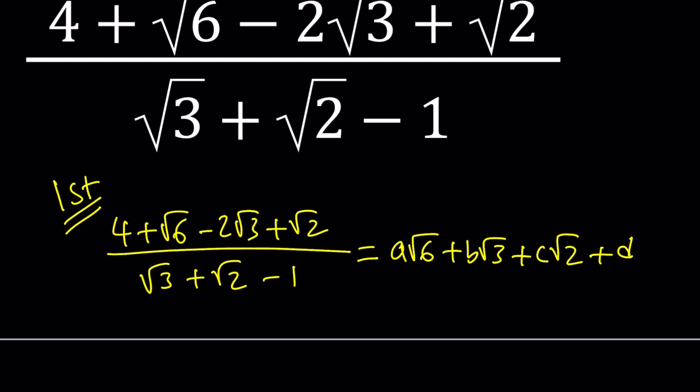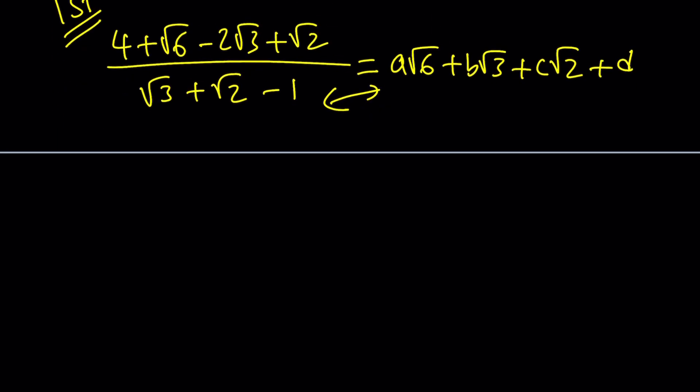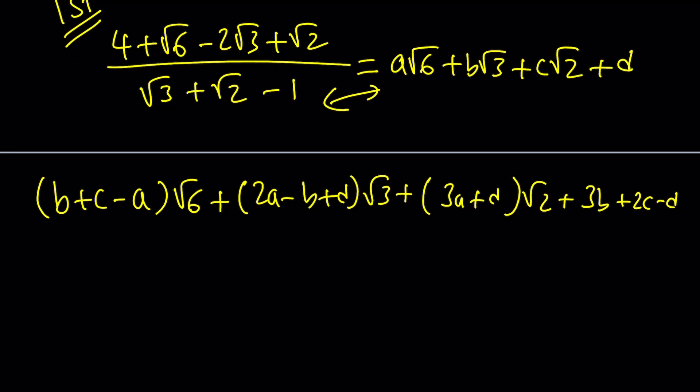To keep a long story short, we're going to go ahead and distribute this, cross-multiply, set it equal to the numerator. And that's going to give us something like this: (B+C-A)√6 + (2A-B+D)√3 + (3A+D)√2 + (3B+2C-D). And this equals √6 - 2√3 + √2 + 4.